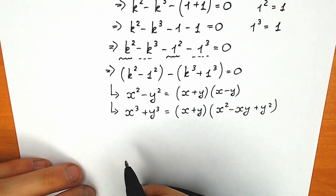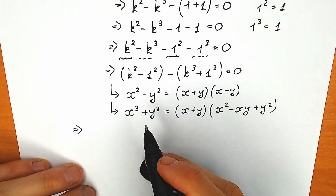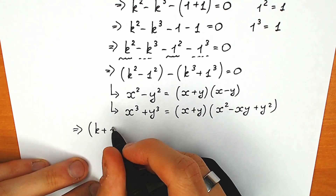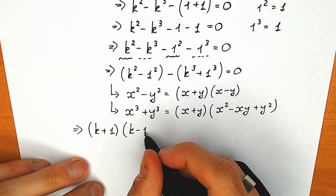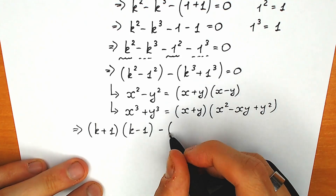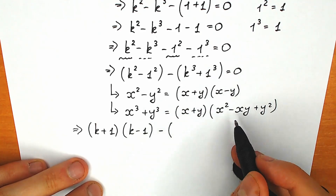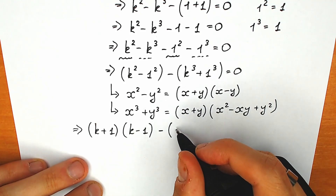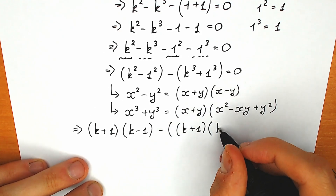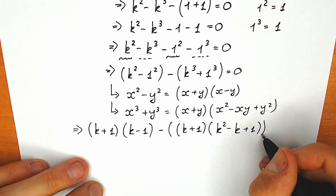Let's apply the formulas. For the difference of squares, we have (k plus 1)(k minus 1). And in the second parenthesis, with the minus in front, we apply the sum of cubes formula: minus (k plus 1)(k squared minus k plus 1), equal to zero.